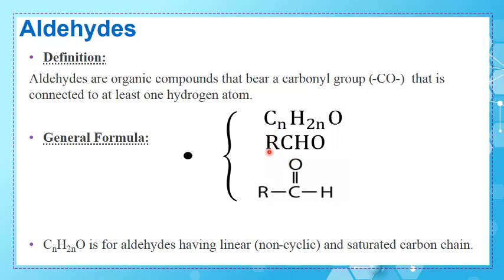The more general formula is RCHO. I will remind you again: when you write this, you have to respect the order. You have to write R, then CHO — never OH — because if we write OH it will look like the hydroxyl group of alcohol. For aldehyde we write CHO to indicate the carbonyl group with a terminal hydrogen atom, and here is the alkyl group R.